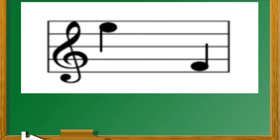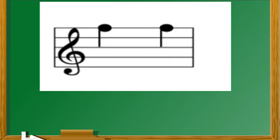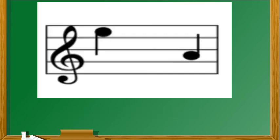Dito naman tayo sa pangatlong bilang. Bilangin natin muli. Isa, dalawa, tatlo, apat, lima, anim, pito. Ang tamang sagot ay seventh interval. Pangapat na bilang, ano ang tamang sagot? Ito ay prime interval, dahil ito ay nasa parehong posisyon. Magaling. At panglimang bilang naman, bilangin natin muli. Ang nasa unang note ay nasa bahagi ng puwang o espasyo. Bilangin natin pababa. Isa, dalawa, tatlo, apat, lima. Ang tamang sagot sa panglimang bilang ay fifth interval.